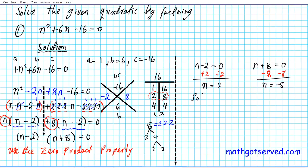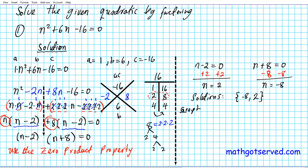Our solutions are the set {negative 8, 2}. If we graph this quadratic equation using a graphing calculator, we'll see that the x-intercepts are negative 8 and positive 2.